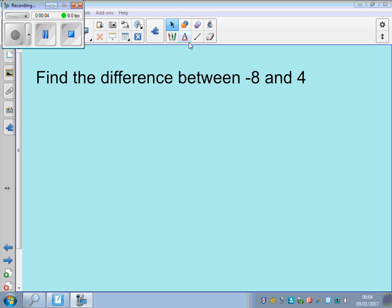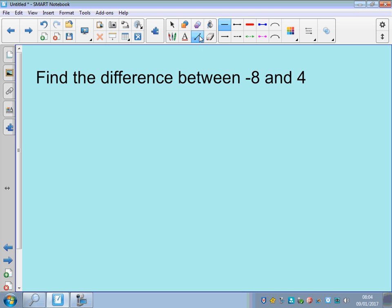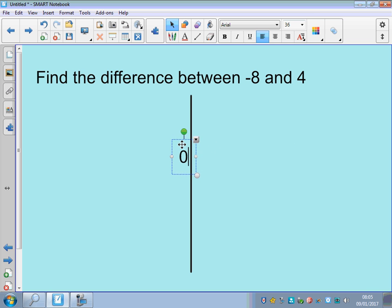What about if you're trying to find the difference between a negative number and another number? Draw the number line this way round again, put 0 wherever you'd like it and make sure it's there.